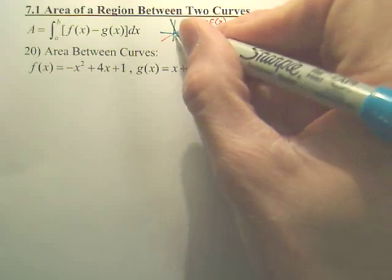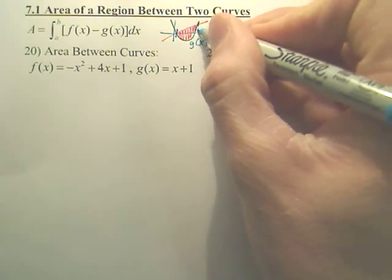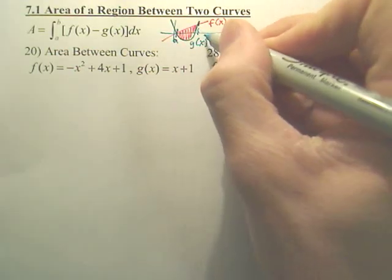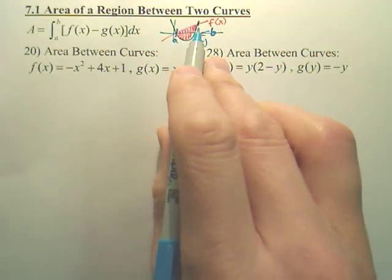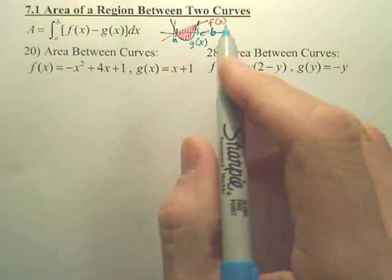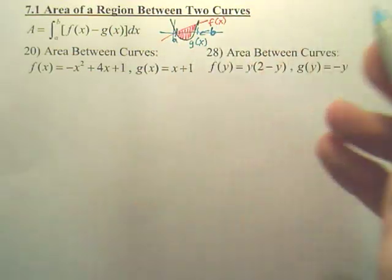A to b is the interval for where they intersect. f of x is the top equation, g of x the bottom equation.